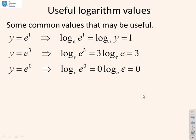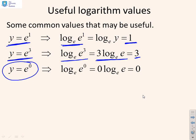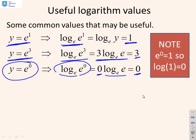Some useful values of logs. If y equals e to the 1 and you take log_e of e to the 1, you get 1. So log_e of e is 1. If y equals e to the 3, log_e of e cubed is 3 log_e of e, which is just 3. And here's the most interesting one: if you do e to the 0, log_e of e to the 0 is 0 times log_e of e, which is 0. So e to the 0 is 1, and therefore the log of 1 has to be 0. We've just shown that the log of 1 is 0.